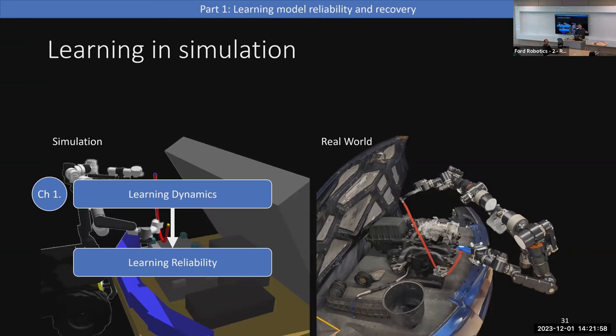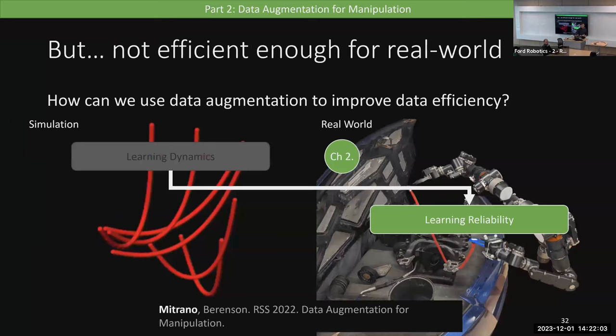So in this chapter, we propose a data augmentation method that improves data efficiency and lets us learn reliability in the real world. This was published at RSS.